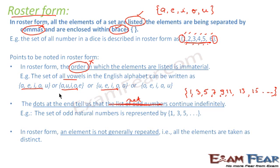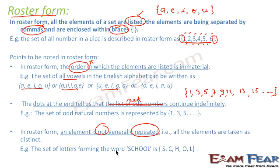In roster form, generally the element is not repeated. For example, when we form the set of letters in the word 'school', the distinct letters are s, c, h, o, l. Even though 'o' appears twice in 'school', when writing the set we include 'o' only once. So in roster form the element is generally not repeated.